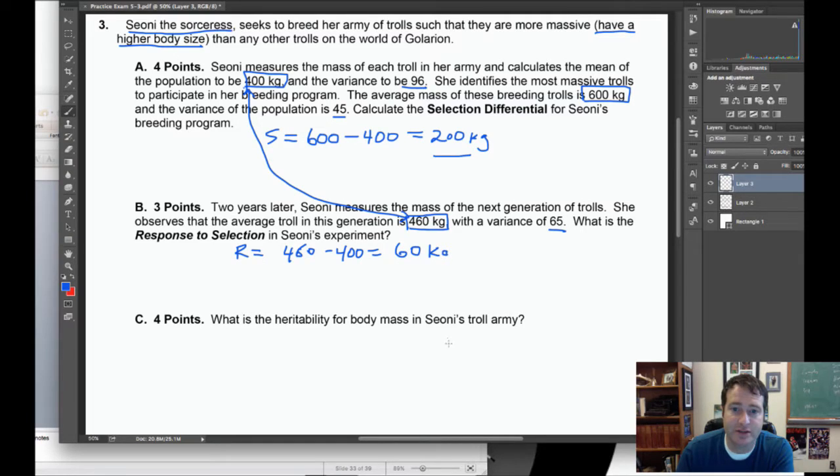What is the heritability for body mass in this troll army? Here is where we apply the breeders equation. In this case we're using the breeders equation to calculate an estimate of heritability: R equals h squared times S. This will be on your formula sheet.